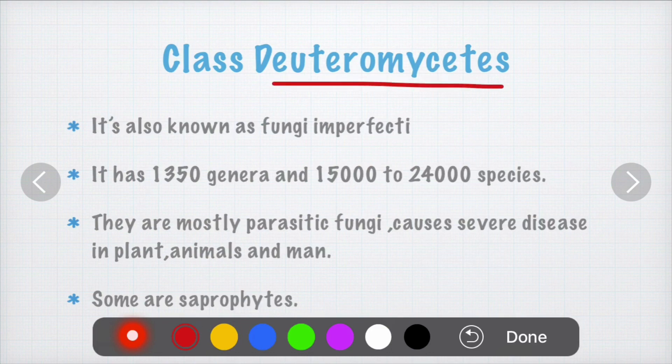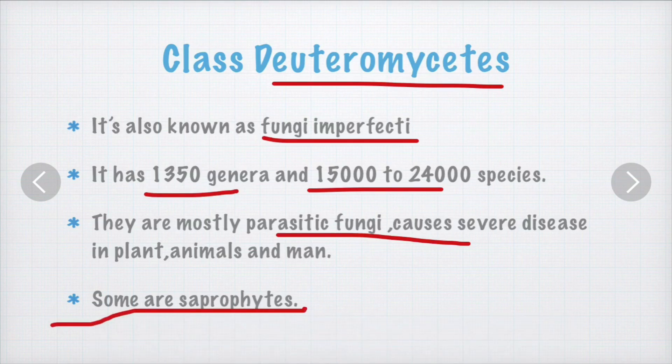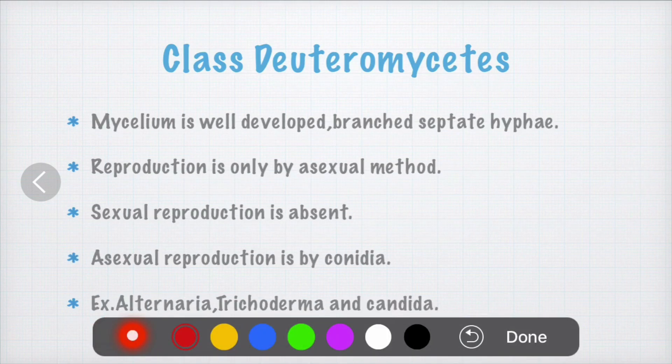Next we will see class Deuteromycetes, also called Fungi Imperfecti. It has 1,350 genera and 15,000 to 24,000 species. They are mostly parasitic — all fungi that are parasitic and cause disease to animals, plants, and humans are classified under class Deuteromycetes. Some are saprophytes, getting nutrition from dead or decaying matter.